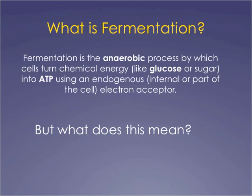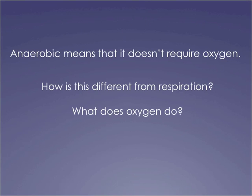In the chemical sense, fermentation is an anaerobic process where cells turn chemical energy, like glucose or other sugars, into ATP. They extract energy from the glucose and store that energy in ATP using an endogenous — which means internal or part of the cell — electron acceptor. That endogenous electron acceptor is typically going to be an organic molecule. Anaerobic means that it doesn't require oxygen.